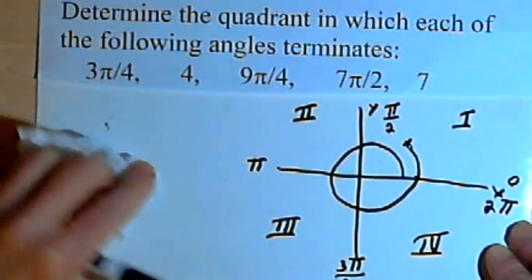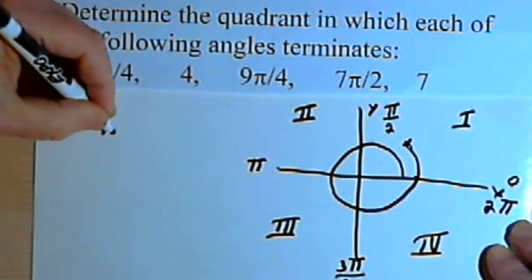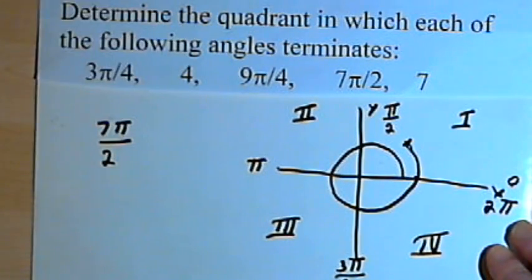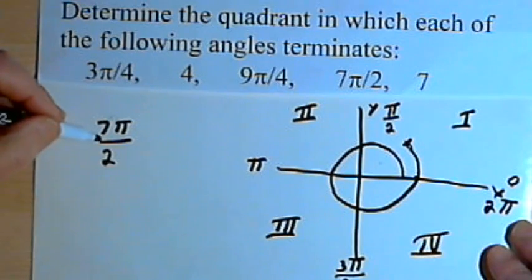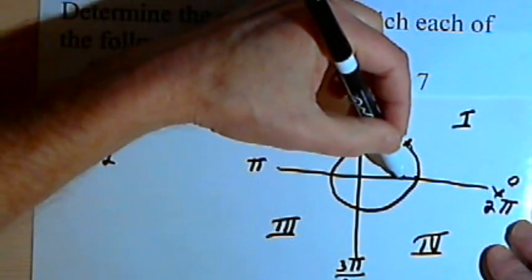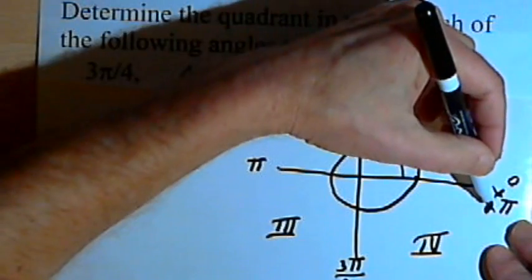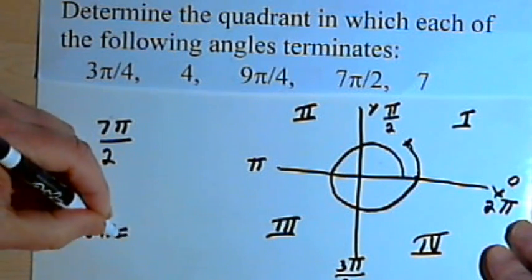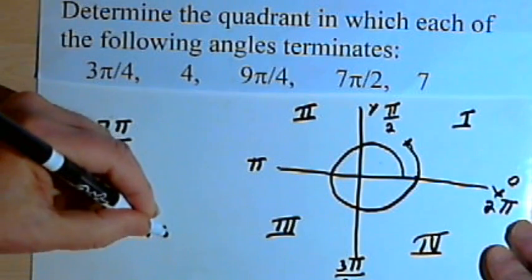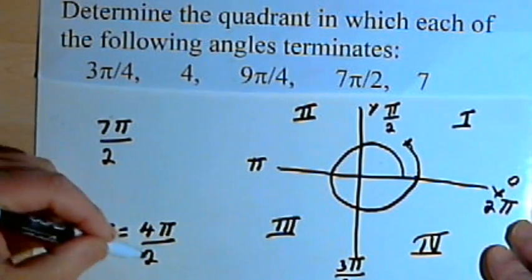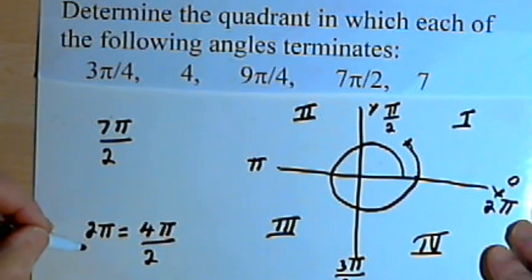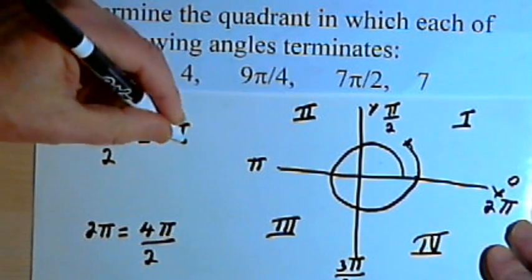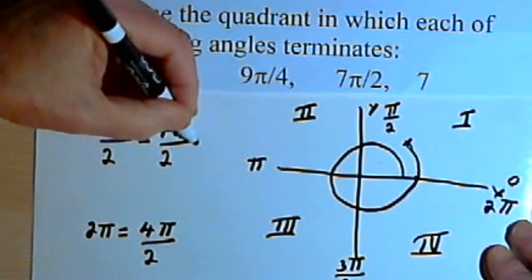Let's do a few more. So what about 7π/2? It looks like once again I'm going to go a complete circle around. If I travel all the way around and cover 2π, 2π is the same as 4π/2. In other words, 4 over 2 would reduce down to 2. So let's subtract that 4π over 2 from 7π/2. That leaves me with 3π/2.